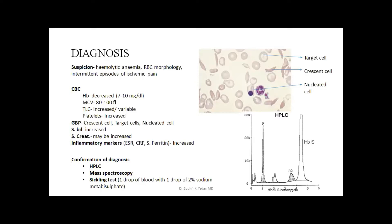If the patient presents with multiple episodes of unprovoked painful crisis, sickle cell disease should be evaluated and ruled out. The three features are: first, hemolytic anemia; second, if in the GBP there is any appearance of sickle-like RBCs; and third, if there is recurrent painful disease. These patients warrant suspicion of sickle cell disease.